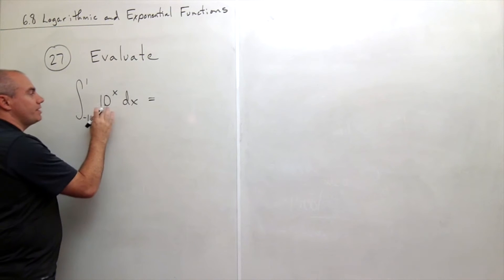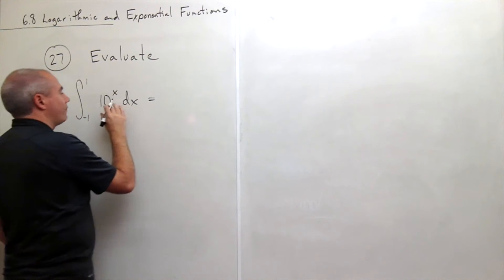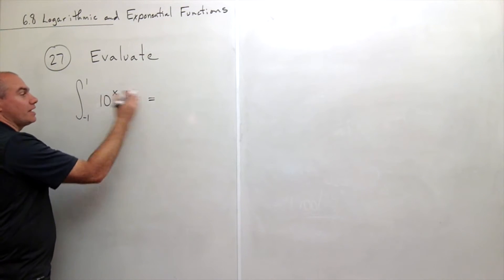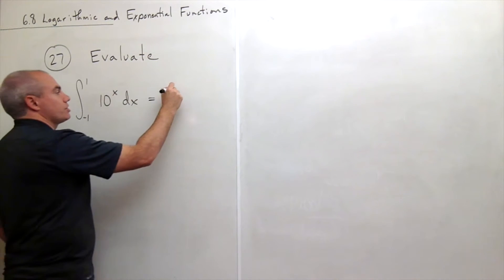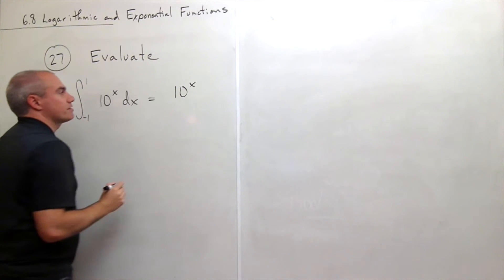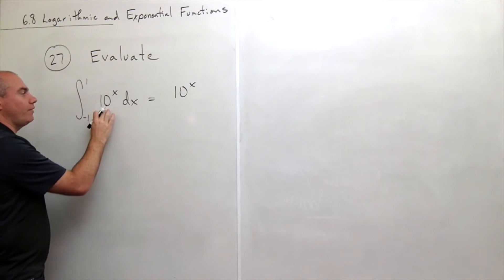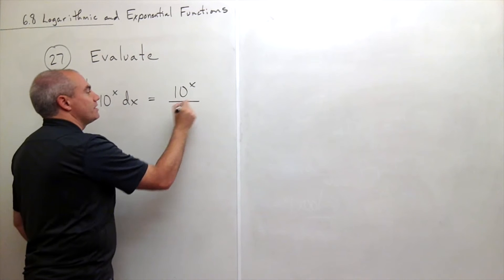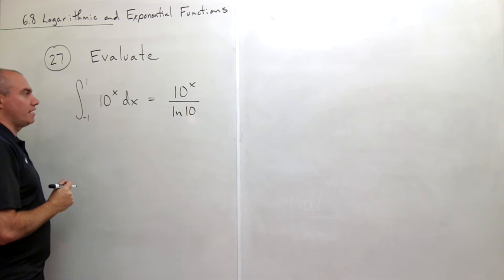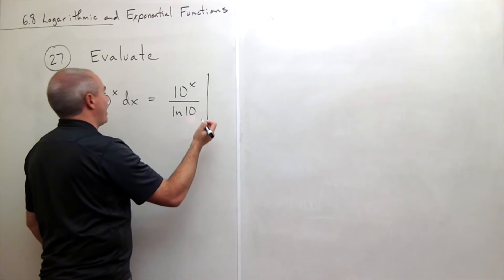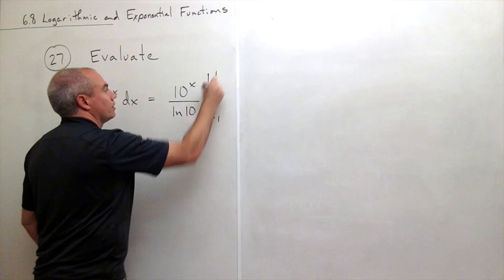It's very similar to taking the antiderivative of e^x, except there's a 10 in the base and not an e. If we were taking the antiderivative of e^x, it would just be e^x. Similarly, for 10^x, it's just 10^x. But we have to account for the fact that the base is 10 by dividing by ln of the base, 10. Then we want to evaluate that from -1 to 1.